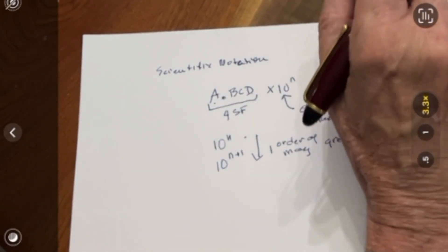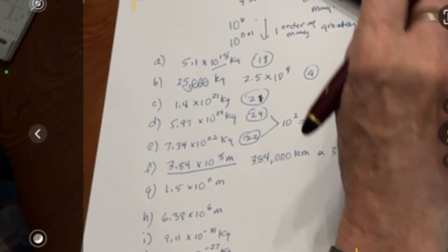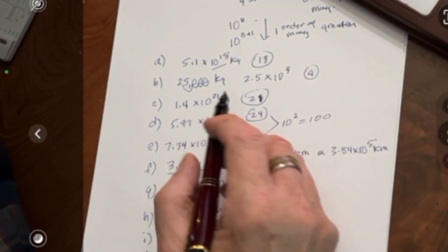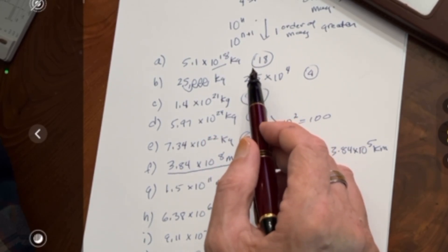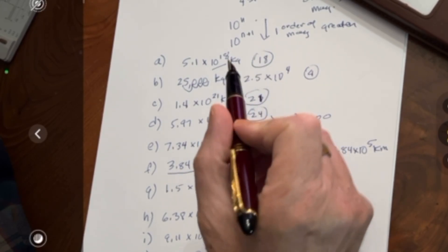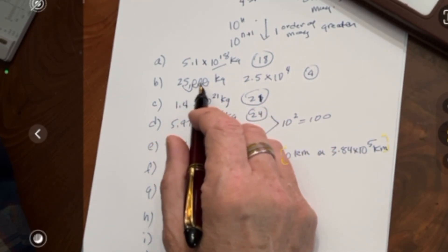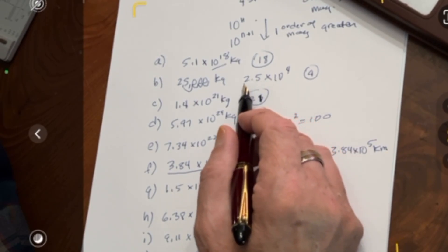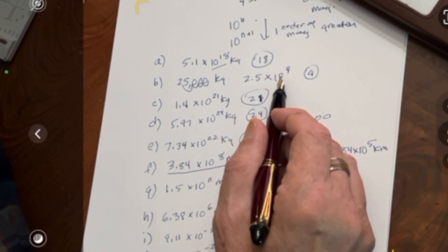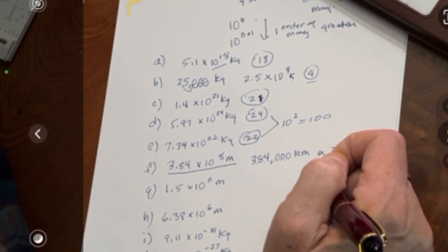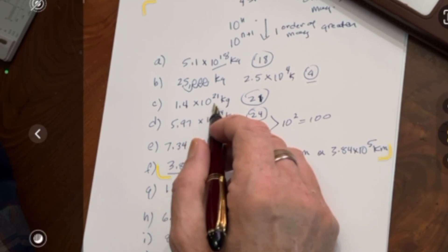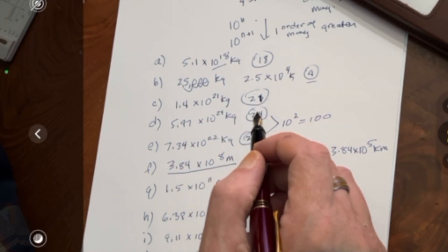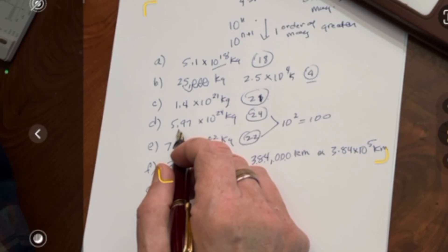Let's take a look at a couple of these questions. First, the mass of the Earth, 5.81 times 10 to the 18th kilograms. The magnitude of that is 18. Next, the mass of the Moon's atmosphere, 25,000 kilograms. Let's go ahead and put that in scientific notation: 2.5 times 10 to the 4 kilograms, and that's magnitude 4. Next, we have the mass of the Earth's hydrosphere, the oceans, 1.4 times 10 to the 21 kilograms, magnitude 21.